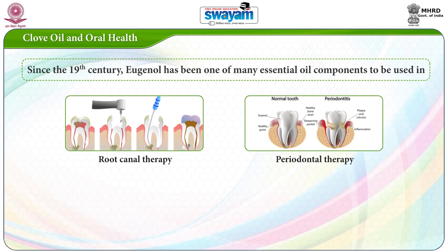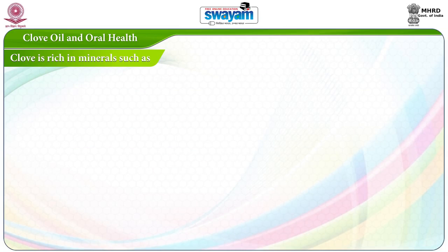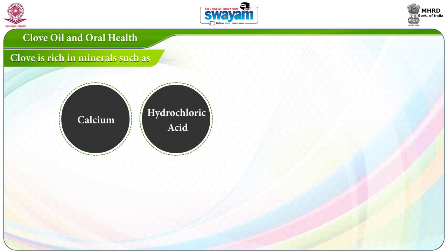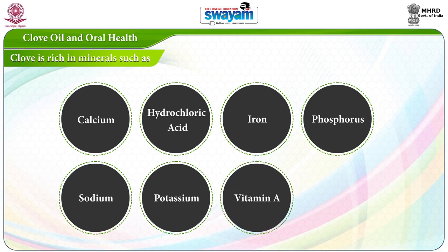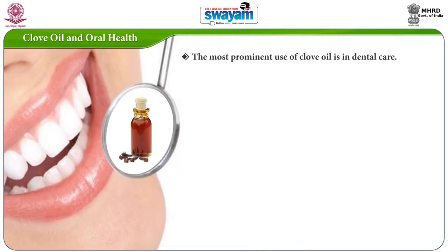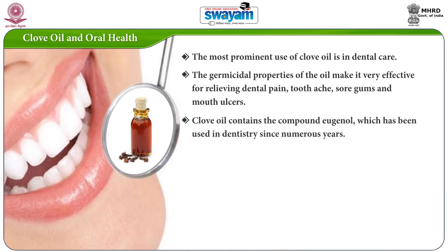Eugenol has been used in periodontal therapy and to treat abscesses. Clove is rich in minerals such as calcium, hydrochloric acid, iron, phosphorus, sodium, potassium, and vitamins A and C. The most prominent use of clove oil is in dental care. The germicidal properties of the oil make it very effective for relieving dental pain, toothache, sore gums, and mouth ulcers.